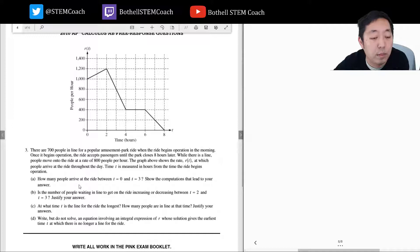How many people arrive at the ride between zero and three? Another rate question, interesting. Another rate question on the non-calculator portion. How many people arrive at the ride between zero and three? It would be the area under this. So what's your favorite way to do the area? I kind of see two trapezoids here. This trapezoid and this trapezoid.